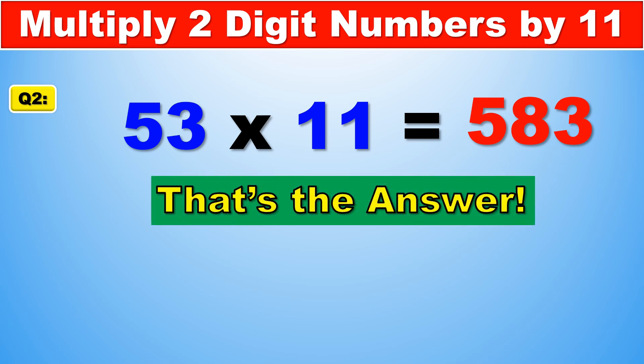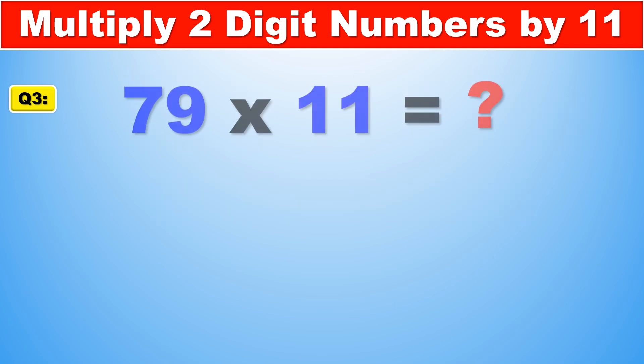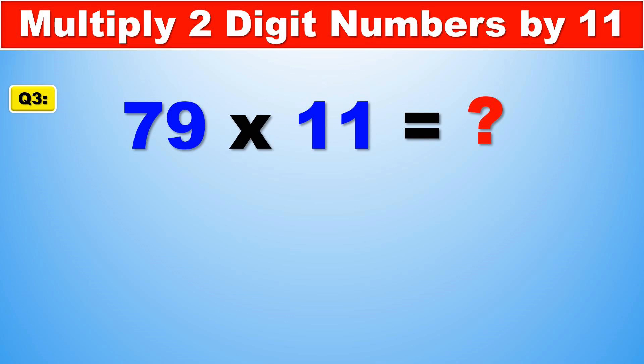Now let's take a look at a slightly more interesting version. 79 times 11. This one is quite interesting, because if we do the normal system, we start with 7 in the left-hand side, 9 in the right-hand side, and the middle is quite interesting, because 7 plus 9 is 16. It's two digits, and we can only fit one digit there. So what do we do? Well, carry over.